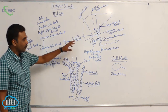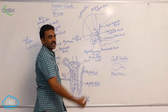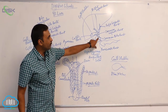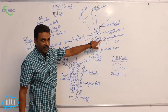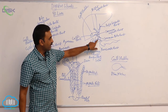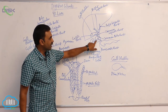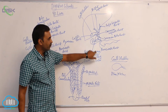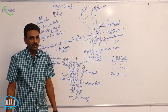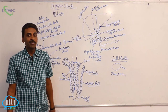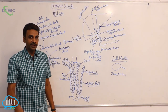At the junction where the common bile duct combines with the pancreatic duct to form the hepato-pancreatic duct, you will find the sphincter of Oddi.